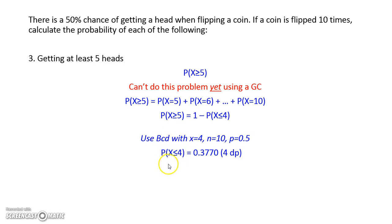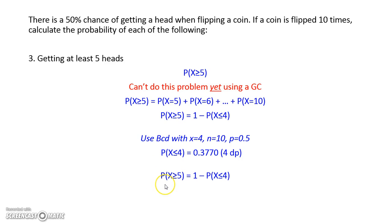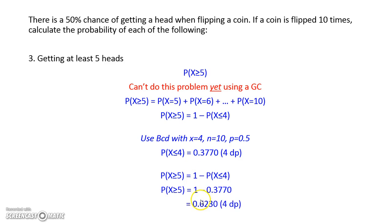The probability of x being less than or equal to 4 is 0.3770. But we haven't quite finished the problem, because what we were interested in was the probability that x was greater than or equal to 5. So we finish by subtracting this value from 1. When we do that, we find that the probability of getting at least 5 heads is 0.6230 to 4 decimal places.